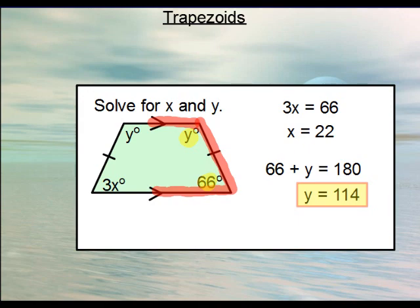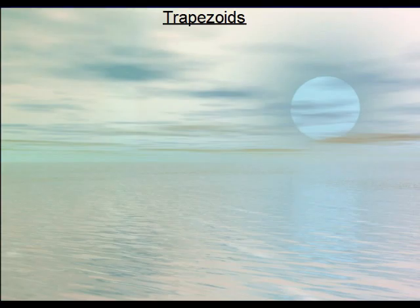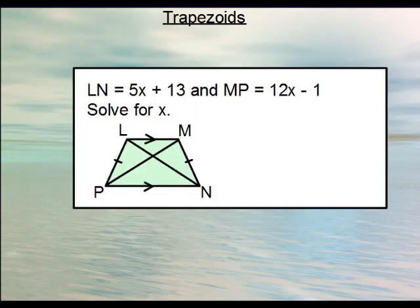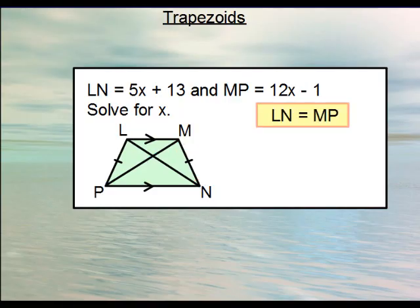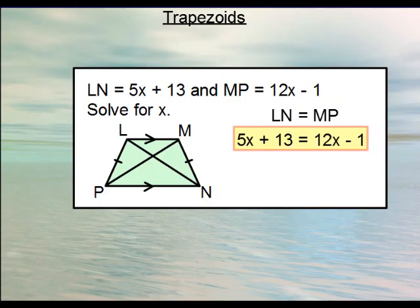Let's do one last example involving the diagonals. You're told that diagonal LN equals 5x + 13 and diagonal MP equals 12x − 1. Since this trapezoid is isosceles — we know this because the legs are congruent and those sides are not parallel — the diagonals are equal in length. Therefore LN = MP. Writing 5x + 13 = 12x − 1 and solving, you subtract 5x from both sides and add 1 to get an answer of x = 2.